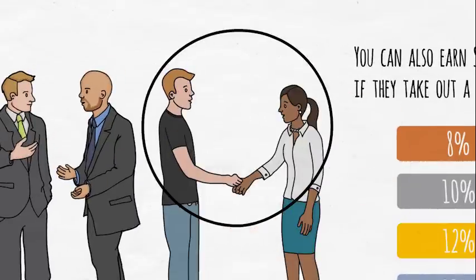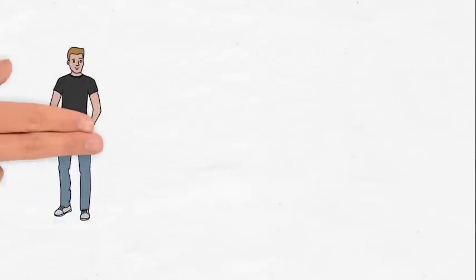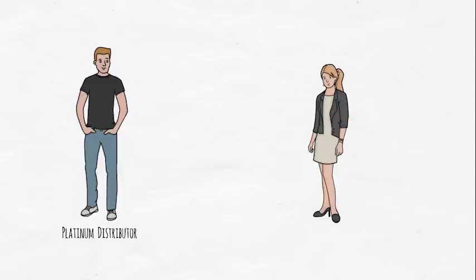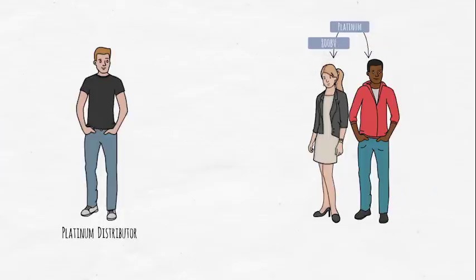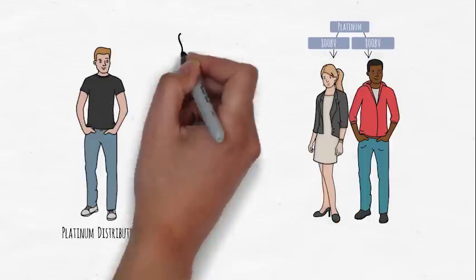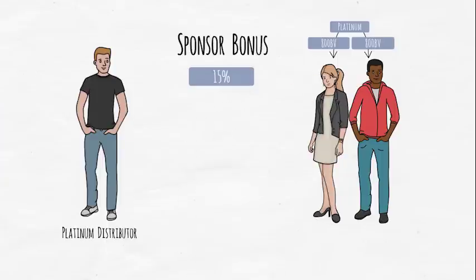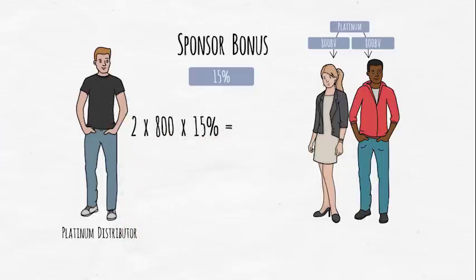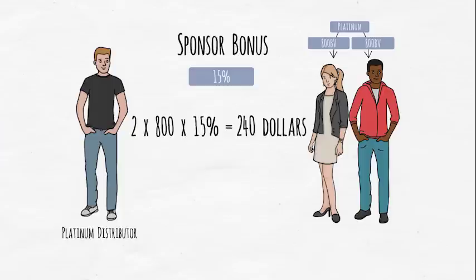Let's look at an example. Here's Tony, he's a platinum distributor. He's introduced Emily and Jeff. They both decide to go for the platinum joining package, which is worth 800 PVs each. Let's see how Tony's sponsor bonus is worked out. For platinum, the sponsor bonus rate is 15%. So for introducing two new distributors, Tony's bonus is calculated at 2 times 800 times 15%, which is $240. And don't forget, sponsor bonuses are paid weekly.